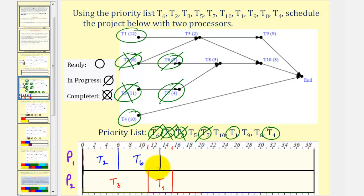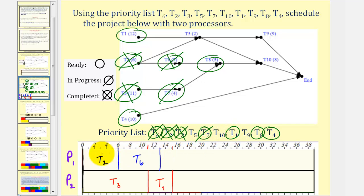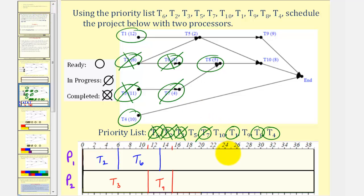After thirteen hours, task six is complete — we mark it as complete. Notice how this makes task eight ready. The highest priority ready task is now task one, which we assign to processor one. Notice task one takes twelve hours, so we have thirteen plus twelve, that's twenty-five. Task one is now in progress.